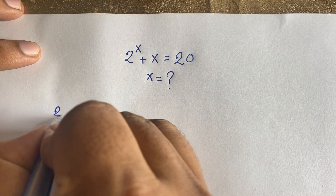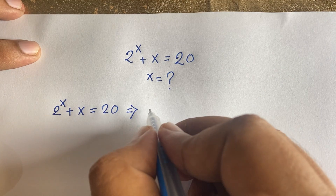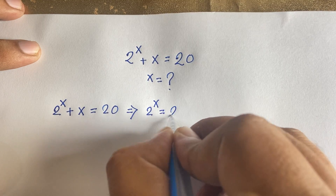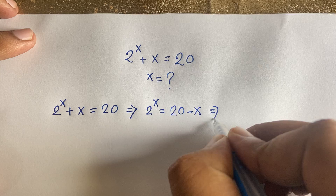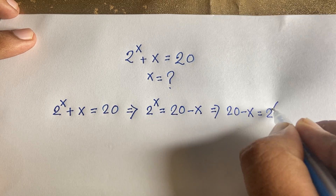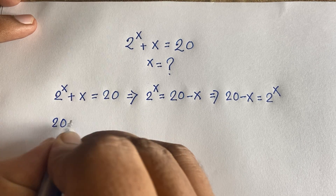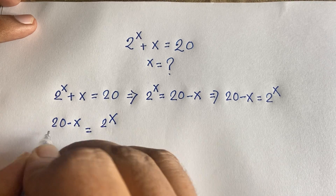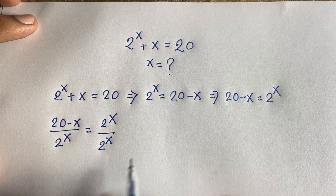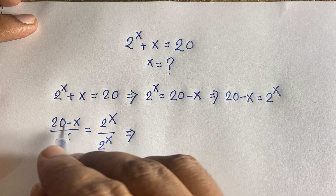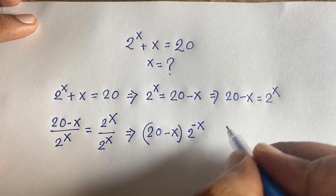Our question is 2 to the power x plus x is equal to 20. I can rewrite this as 2 to the power x equals 20 minus x, by moving x to the right side as negative x. Now I can say 20 minus x equals 2 to the power x. Dividing both sides by 2 to the power x, we get: (20 minus x) divided by 2^x equals 1, which gives us (20 minus x) times 2 to the power minus x equals 1.